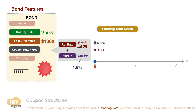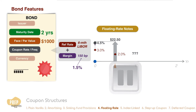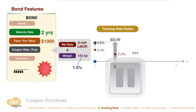Remember that this is the annual rate, so we have to divide the amount by two. So six months later, a coupon of $22.50 is paid. Now let's say the six-month LIBOR drops to 2.0 percent. Are you able to calculate the coupon payment at the one-year mark? Pause the video now and work out your answer.